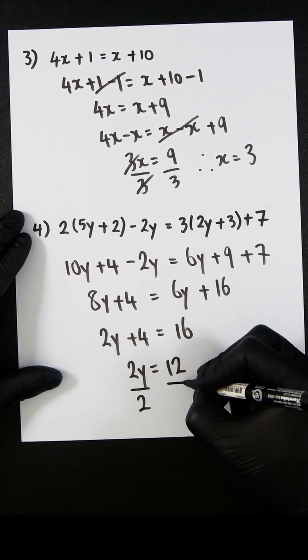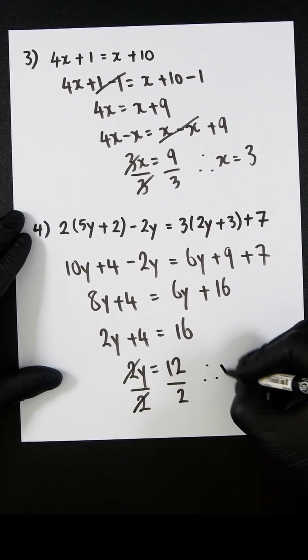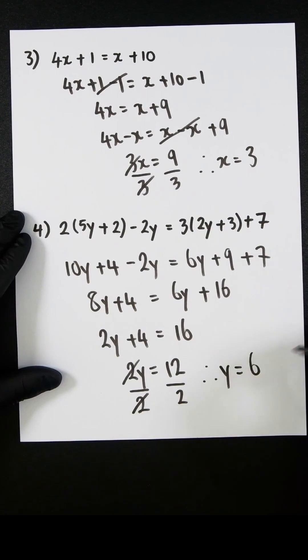Let's divide both sides by 2. This eliminates the 2, and therefore, y would equal 6.